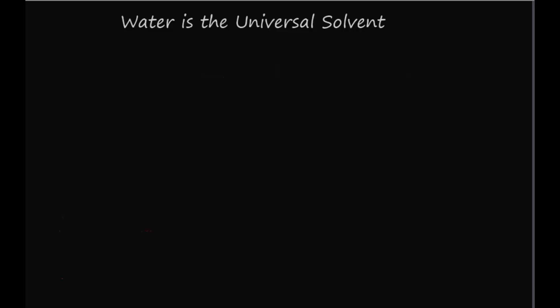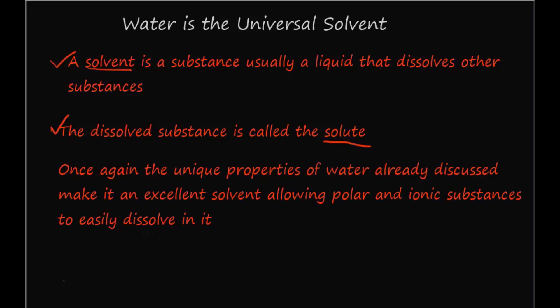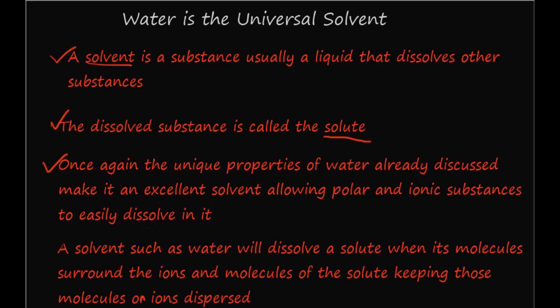Before reviewing why water is called the universal solvent, let's define a solvent and a solute. A solvent is a substance, usually a liquid, that dissolves other substances. The dissolved substance is called the solute. Many of the unique properties of water already discussed make it an excellent solvent, allowing polar and ionic substances to easily dissolve in it. A solvent such as water will dissolve a solute when its molecules surround the ions and molecules of the solute, keeping those ions or molecules dispersed.